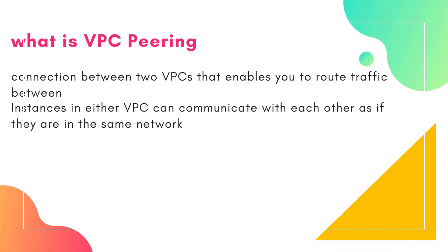Let us start from VPC peering introduction. VPC peering is about connecting between two VPCs, and that enables you to route traffic between the instances in either VPC, and they can communicate as they are in the same network. This is something like you have a main site and a DR site, and you connect it with an MPLS cloud or VPN service, and that makes you able to communicate or talk to the instances or resources running in your second site like a local site. The same way, if you have two VPCs, instances in these two VPCs can communicate to each other as they are in the same network after VPC peering.